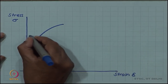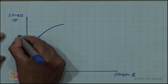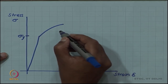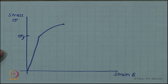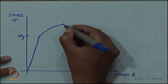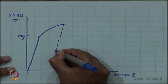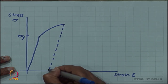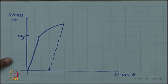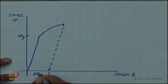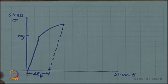Let us do a different kind of test. Note this point — this is the yield stress. We deform the material beyond yield stress, so there is plastic deformation in it, but we stop the test much before fracture. Then we unload the specimen, and the unloading curve is found to be parallel. We loaded and then we unloaded, and this much of residual plastic strain remains in the material.